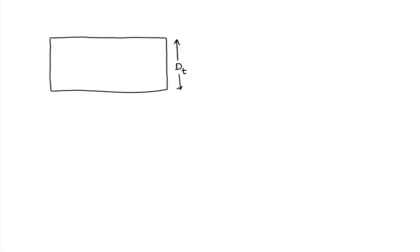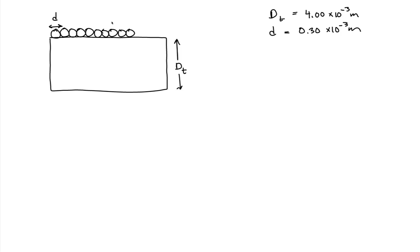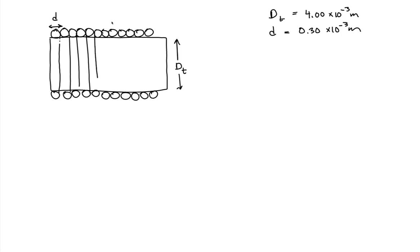Let's begin by sketching this scenario. We're told that an inductor is made by tightly wrapping a 0.30 mm diameter wire around a tube of a certain diameter. We label the tube diameter D sub T, given as 4.00 mm. We make the inductor by tightly wrapping the tube with a wire of diameter 0.30 mm, with the wire spanning the length of the tube. There is our solenoid.